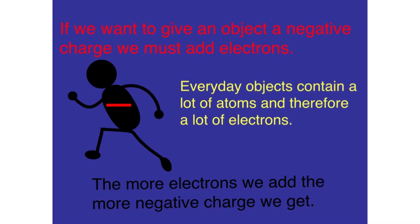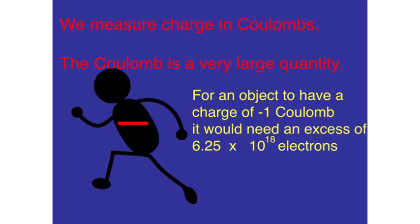If you want to give an object a negative charge, we must add electrons. And we know that everyday objects that we see in the world have a lot of atoms and therefore a lot of electrons. The more electrons that we add, the more negative charge we get. The charge is measured in coulombs. But since we have so many electrons to deal with, the coulomb is a very large quantity.